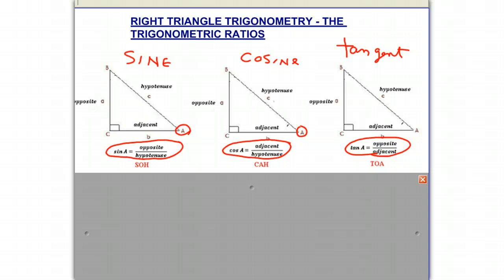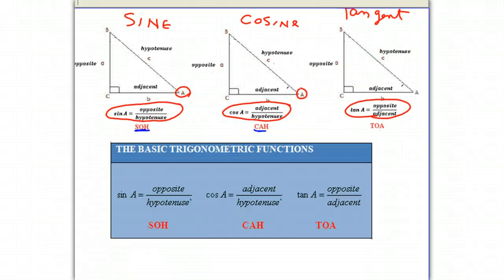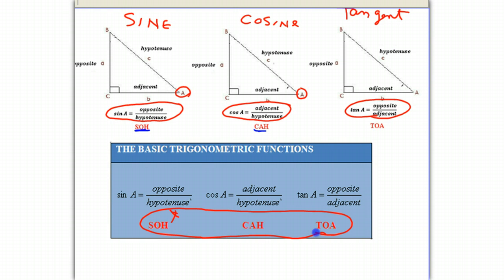There's a little mnemonic we use to remember these. For sine — opposite over hypotenuse — we write S-O-H. Cosine is adjacent over hypotenuse, so we write C-A-H. And tangent is opposite over adjacent, which we call T-O-A. Putting it together: SOH CAH TOA. If you can memorize SOH CAH TOA, you'll always remember that sine is opposite over hypotenuse, cosine is adjacent over hypotenuse, and tangent is opposite over adjacent.